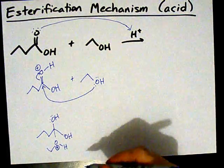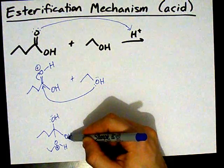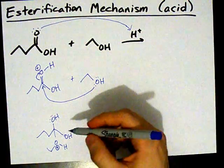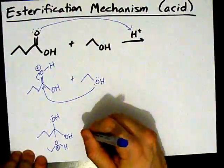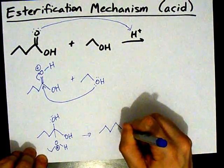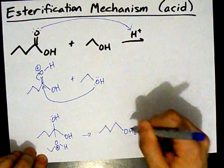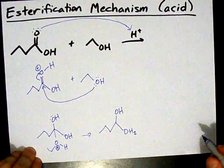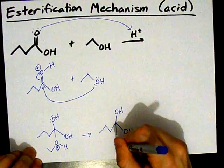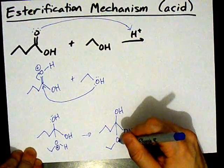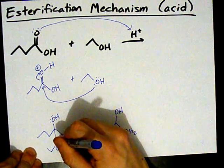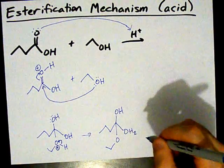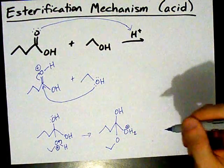Then we get a proton transfer. This hydrogen ends up going on to this oxygen — that could be assisted by the solvent. Sometimes teachers just say it jumps over or whatever, but long story short, there's a proton transfer. You end up with an extra hydrogen on that oxygen. You still have your OH group here, and you now only have two bonds to this oxygen because the hydrogen's gone. Those electrons from the bond went to the oxygen themselves.